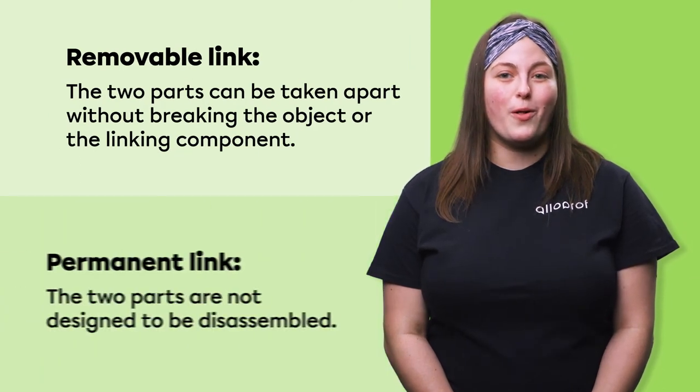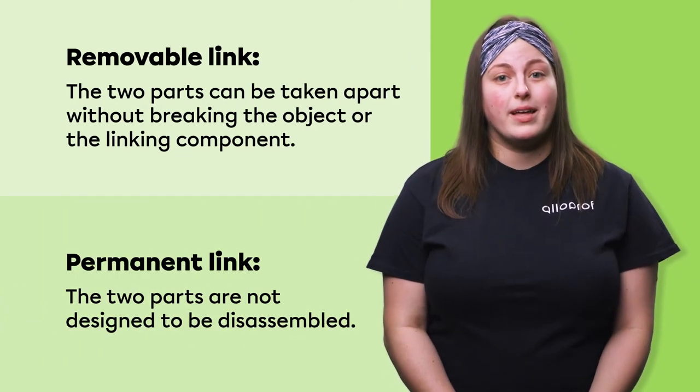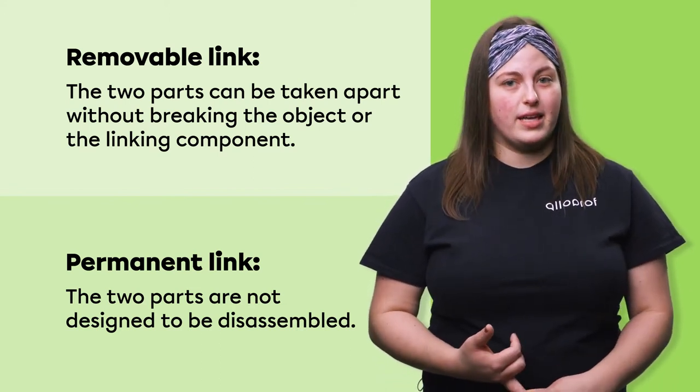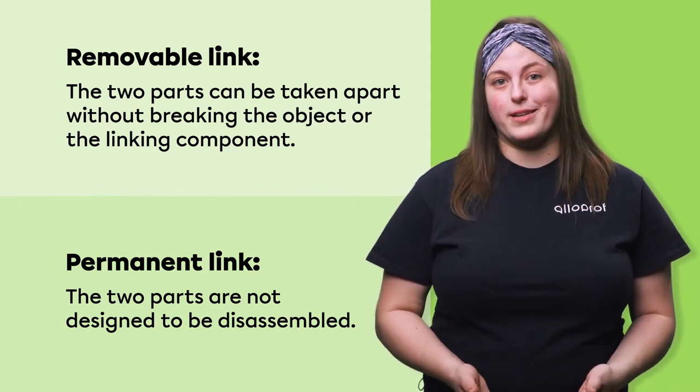A link can also be removable or permanent. For it to be removable, it must be possible to separate the parts without breaking the object or the linking component. If one of the two parts or the linking component gets broken, the link is therefore permanent. Here, the pieces of wood and the spring can be taken apart without breaking any part — the link is therefore removable. On the other hand, the cap and the bottle cannot be separated without breaking one or the other. To remove the cap, we must either contort it with a bottle opener or break the bottle. The link is therefore permanent.